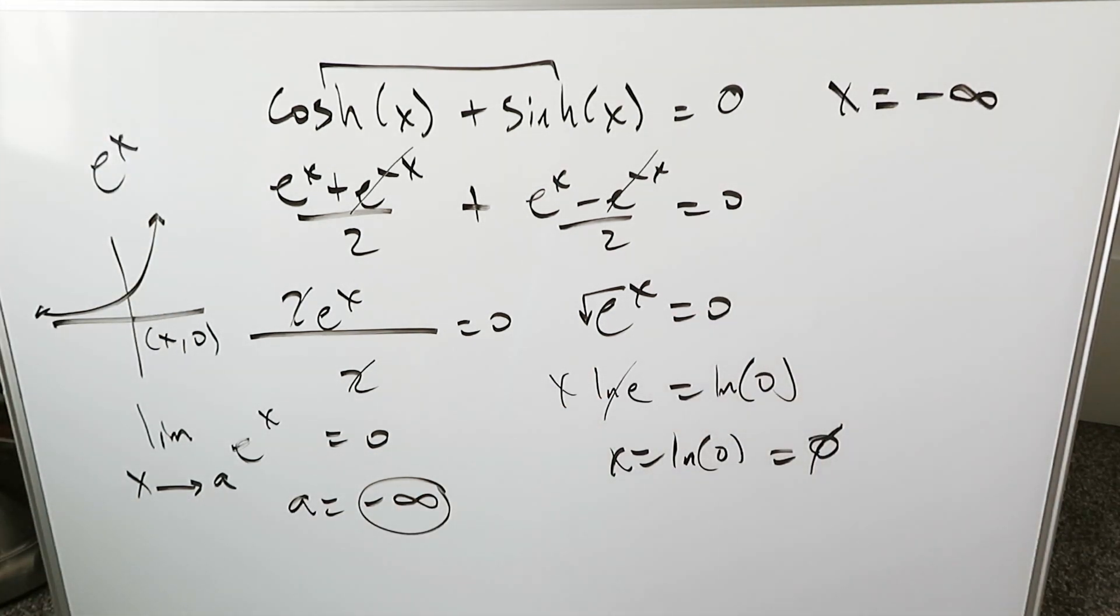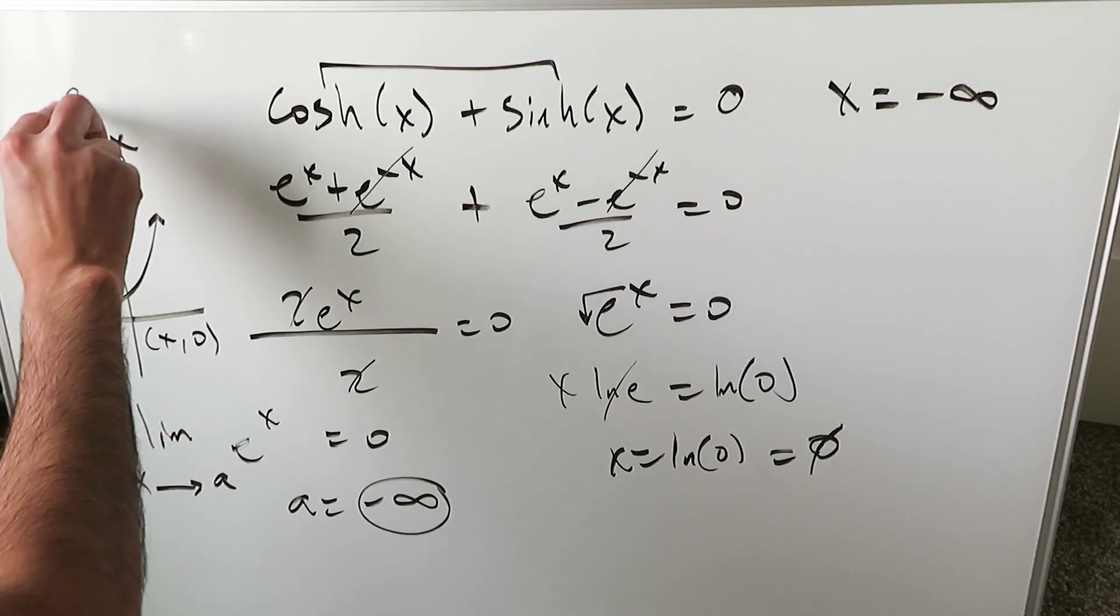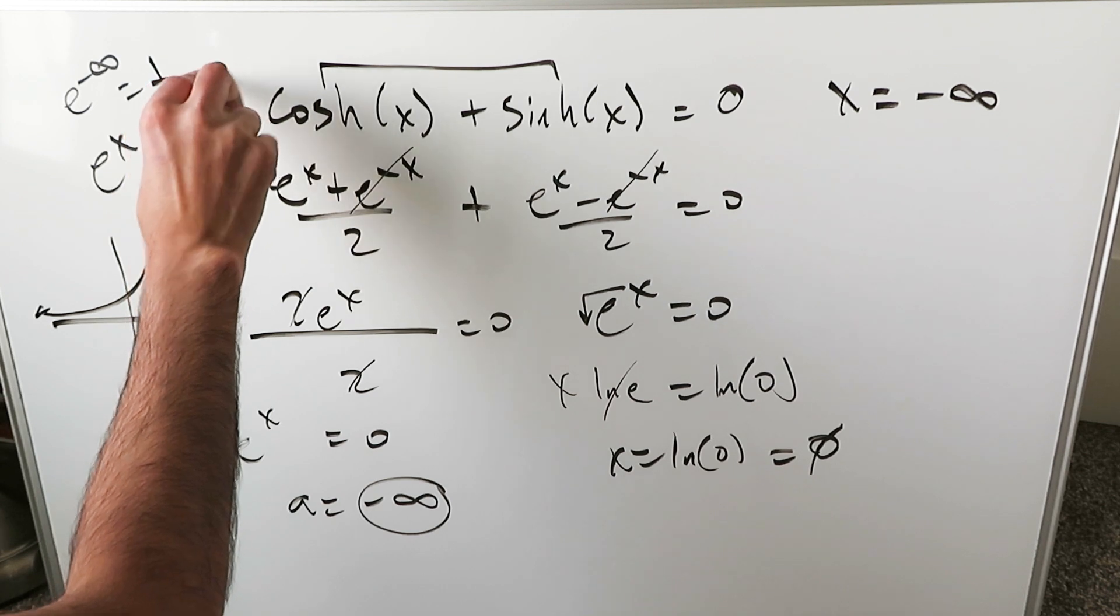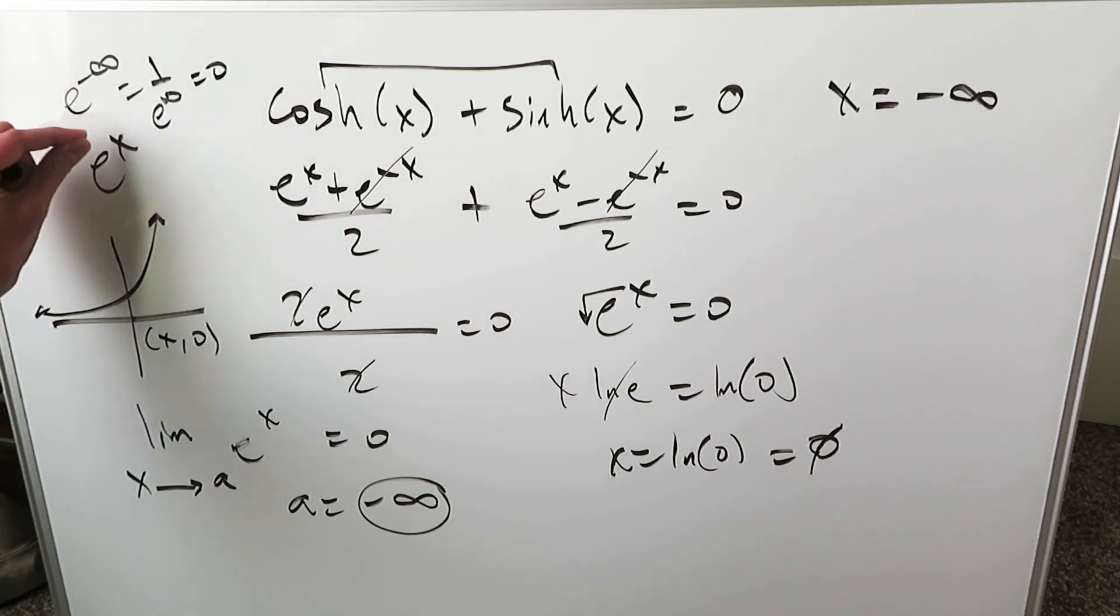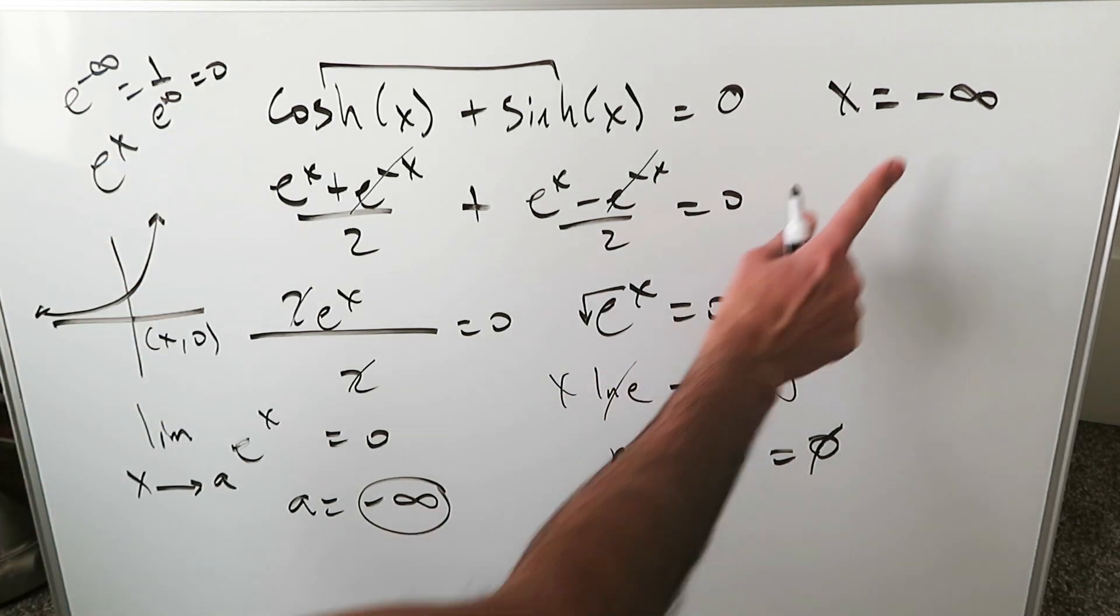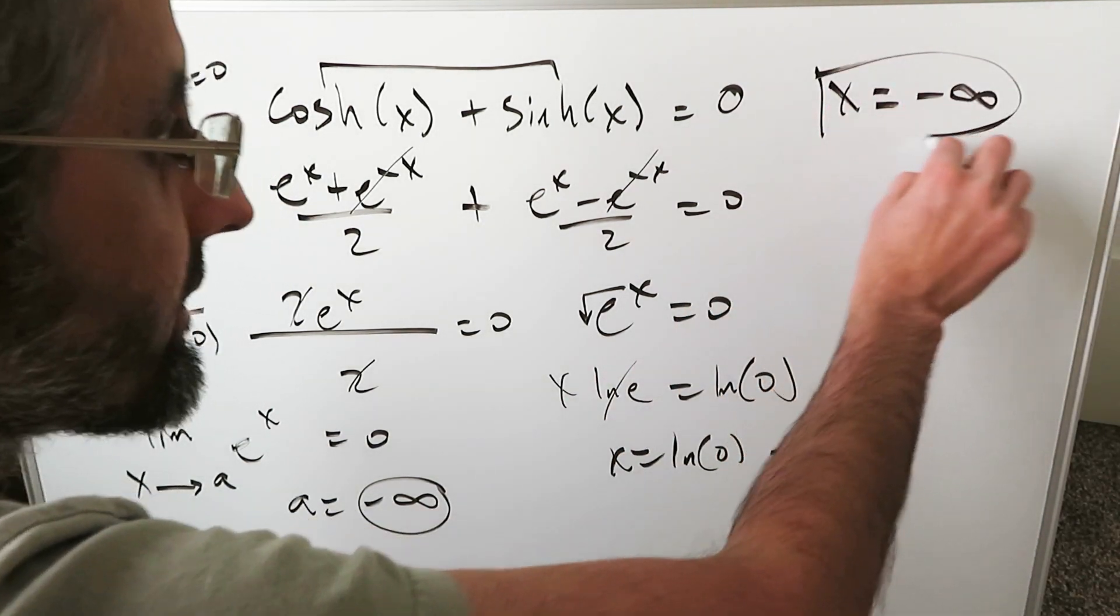And it kind of makes sense. When you put e exponent minus infinity, you know you have 1 over e to infinity and you're becoming 0. It's not 100% equal to 0, but you're approaching it so close to it that you can say it is 0. And that right here would be your answer from calculus.